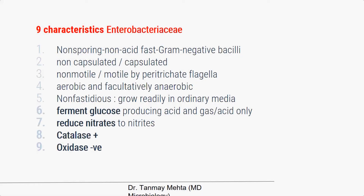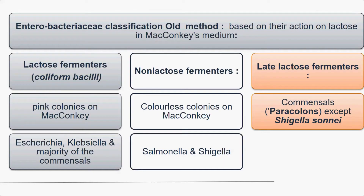Let us start with the Enterobacteriaceae family. It is characterized by nine features: they are gram-negative bacilli, non-capsulated or capsulated, motile or non-motile — if motile, by peritrichous flagella all around the bacteria. They are usually facultative anaerobes and aerobes, non-fastidious, meaning they grow readily on ordinary media like nutrient agar and MacConkey agar. They ferment glucose producing acid and gas, reduce nitrates, and importantly are all catalase positive and oxidase negative.